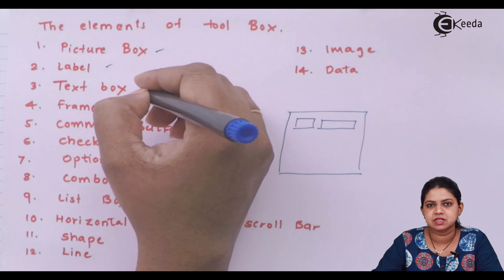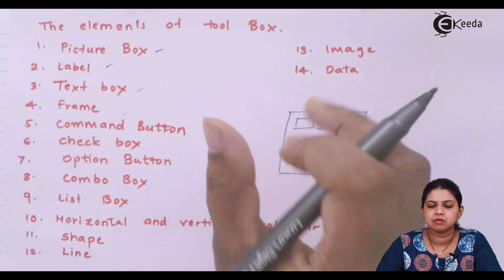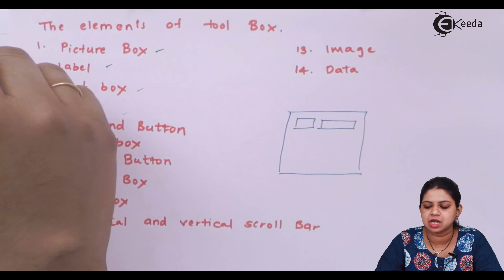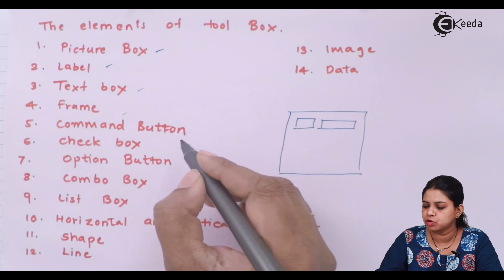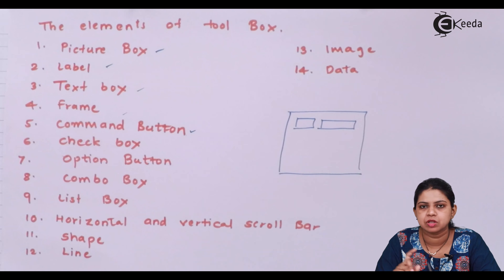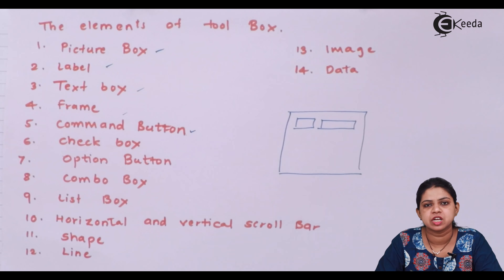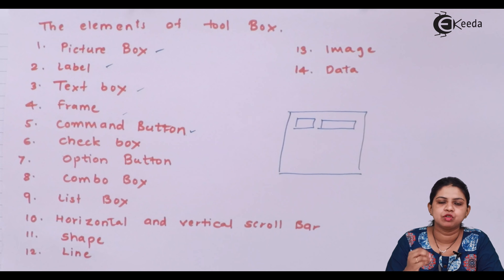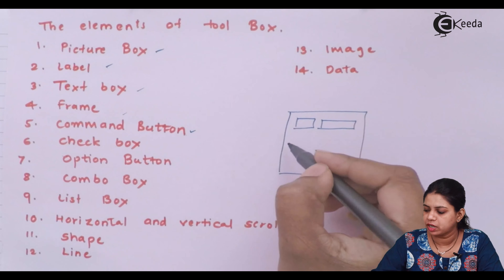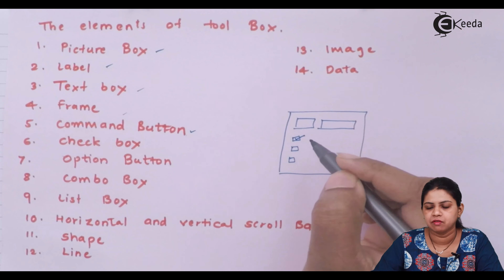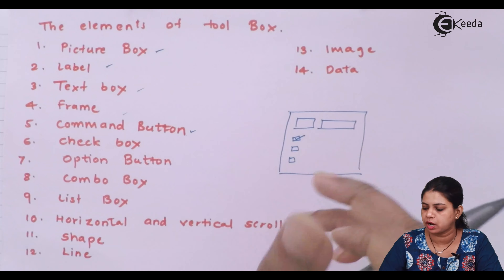In a text box you can edit or enter something, unlike a label which is non-editable. Frame is used for designing purposes, basically to divide your form into various sections. Command button is the most important tool — when you click on it, your form gets submitted. Check box is used to select multiple options from a list. For example, if you want to select multiple subjects from a list, a check box allows you to click and place a tick mark.